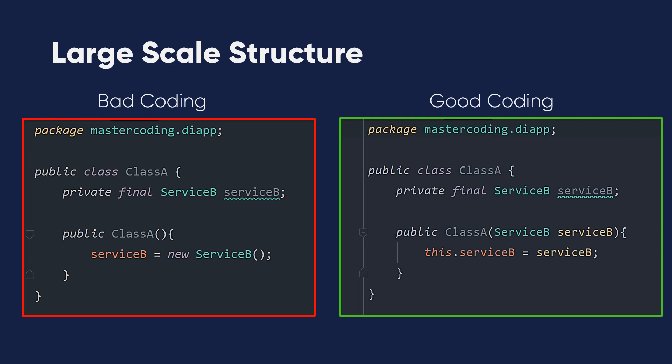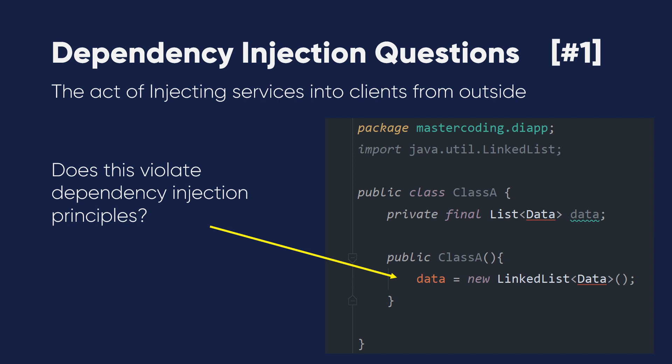If this is so simple, why do people make it difficult and complex? Despite the simplicity of dependency injection — the act of injecting services into clients from outside — there are four questions I want you to think about, and I need you to consider each one carefully.